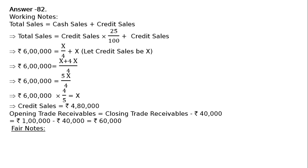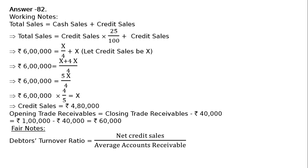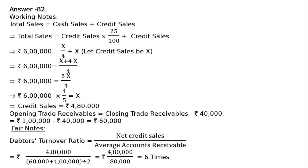We can now solve the debtors turnover ratio, also called trade receivables turnover ratio. It equals net credit sales divided by average accounts receivable = ₹4,80,000 ÷ [(₹60,000 + ₹1,00,000) / 2] = ₹4,80,000 ÷ ₹80,000 = 6 times.